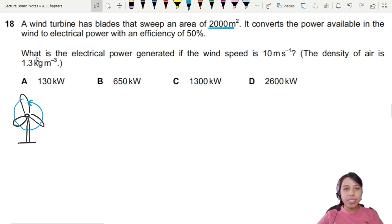So what is the conversion happening here? You have a machine, you feed it kinetic energy, which is going to be what gives us the power in the wind, convert it somehow into electrical power at an efficiency of only half.